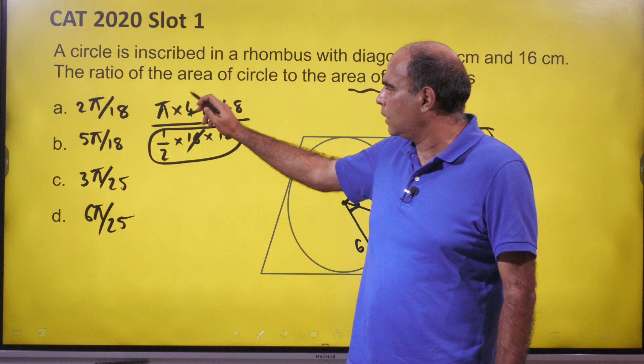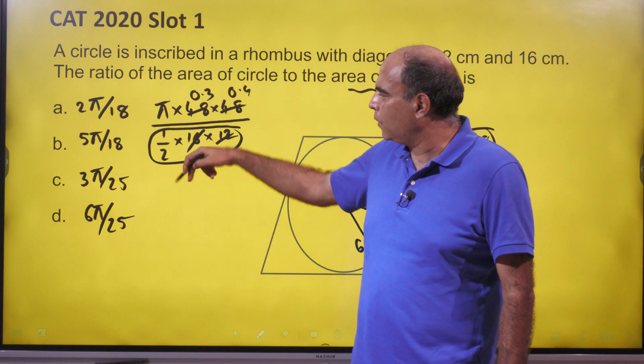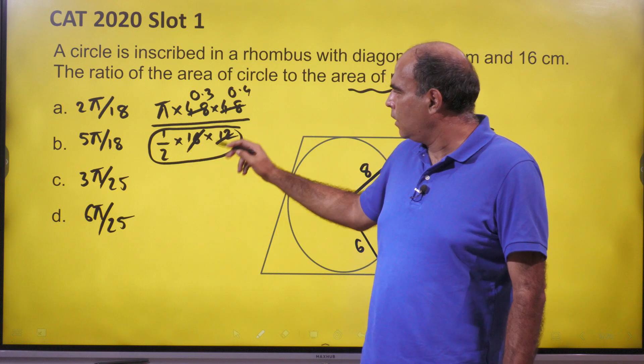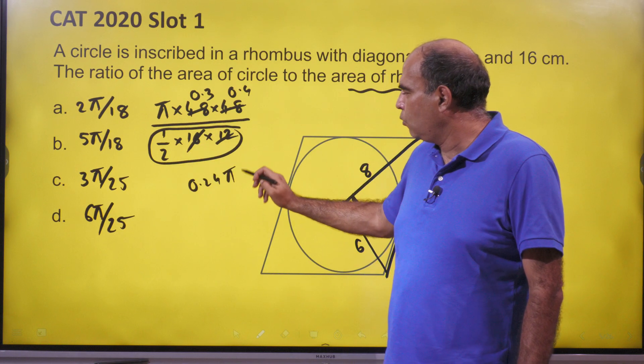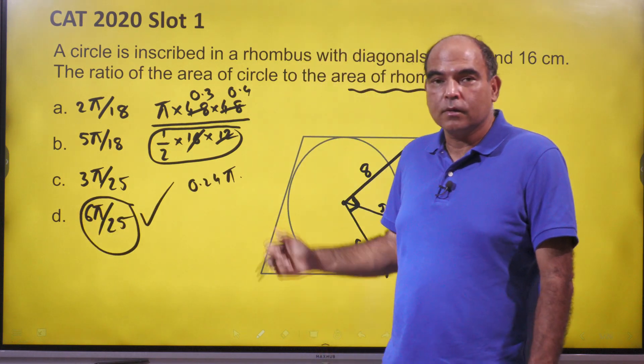The only calculations are: this is 0.3, this is 0.4, and this half will go up, so it's going to be 0.24π, which is 6π/25. That's the correct answer. Thank you so much.